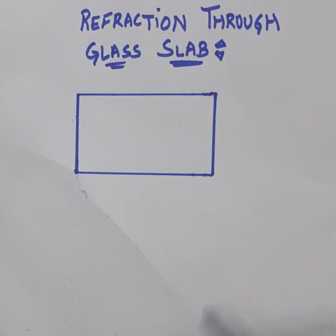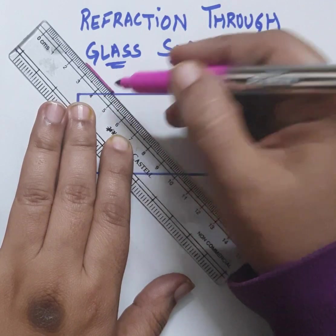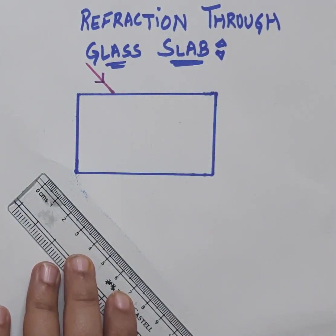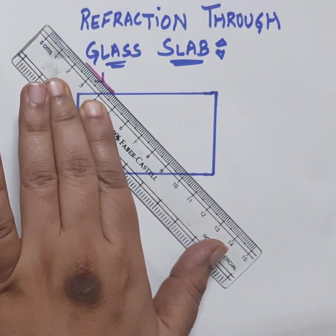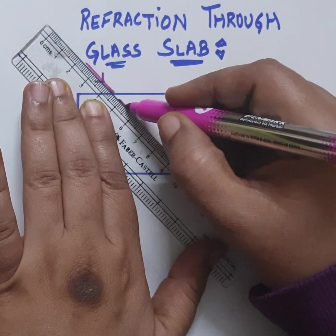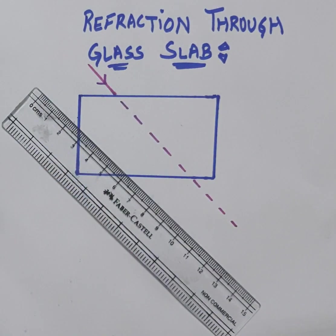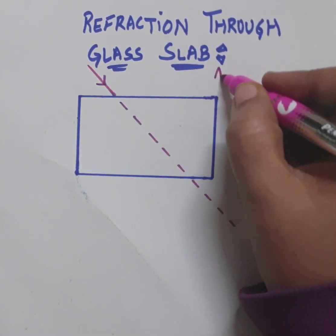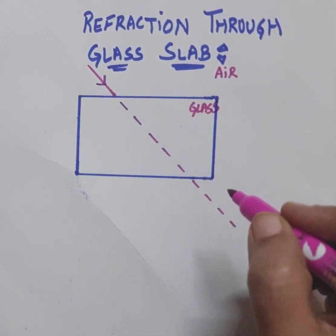You have to draw one oblique incident ray. If there is no glass slab, if there is no change in the medium, then this incident ray must travel in a straight line. I am drawing the actual path without refraction using a dotted line, extending the incident ray. This is the actual path of the incident ray. Due to refraction, this medium is air and this is glass — this is again the last medium.